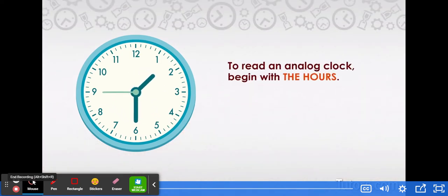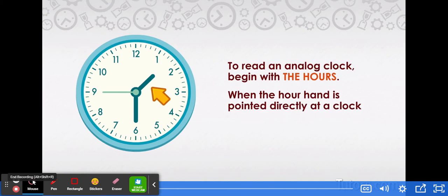To read an analog clock begin with the hours. Look at the shortest hand only. When the hour hand is pointed directly at the clock number, you know it is exactly that hour. The hour hand will point directly at a number only 12 times in 12 hours.